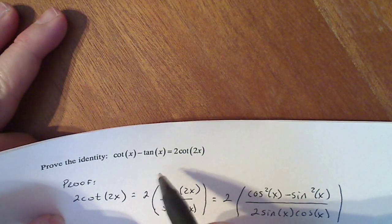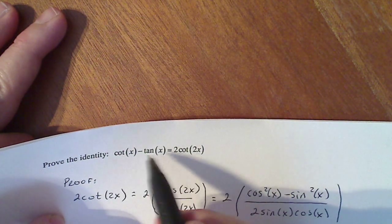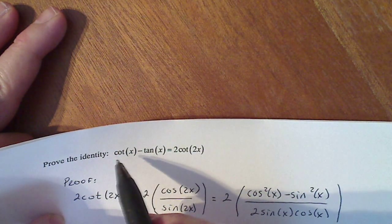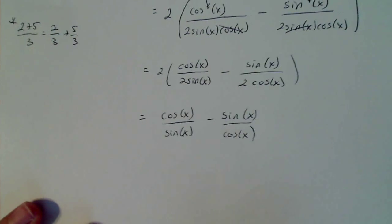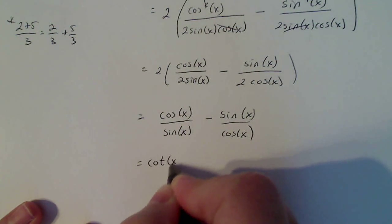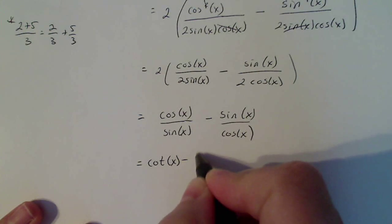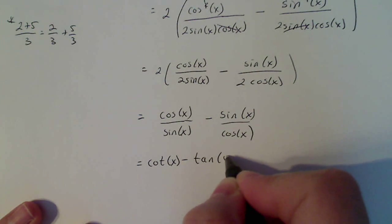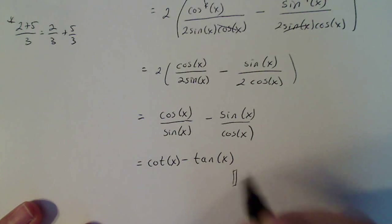The last step is rewriting the other side. This is where I started, that's where I want to end. So I want to make sure the last thing I write is that. So is it true? Let's see. Cosine x over sine x is definitely cotangent of x, and sine x over cosine x is tangent of x. So we have proven the identity.